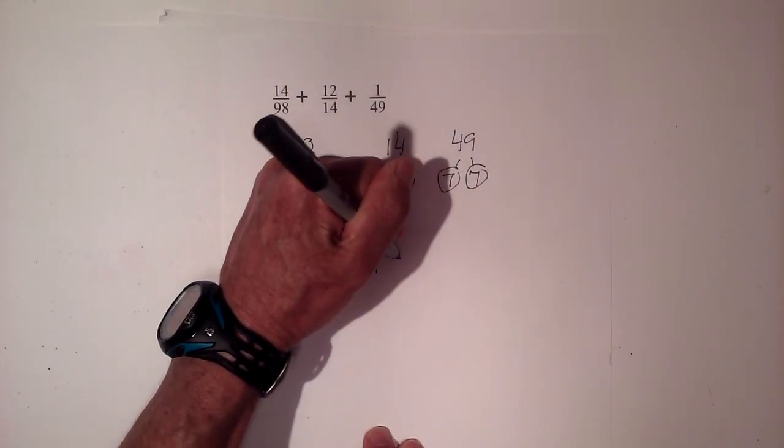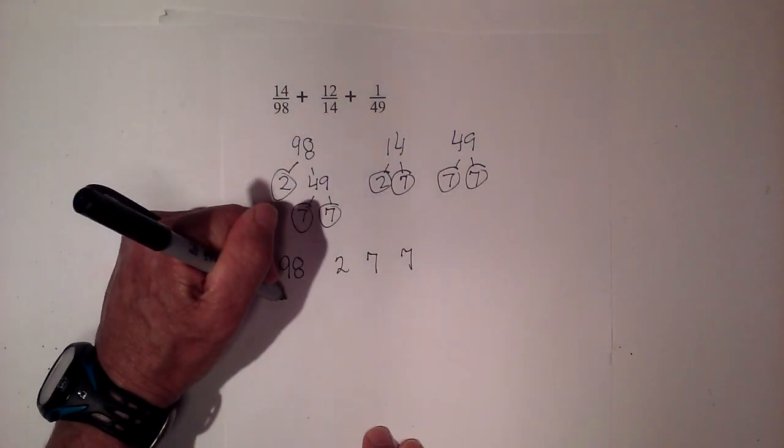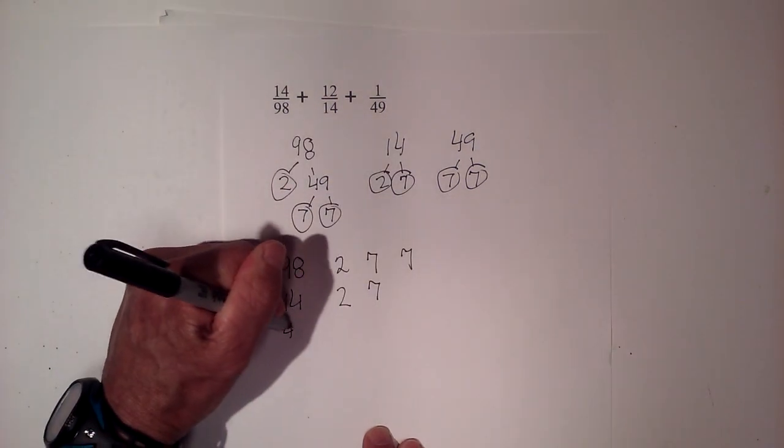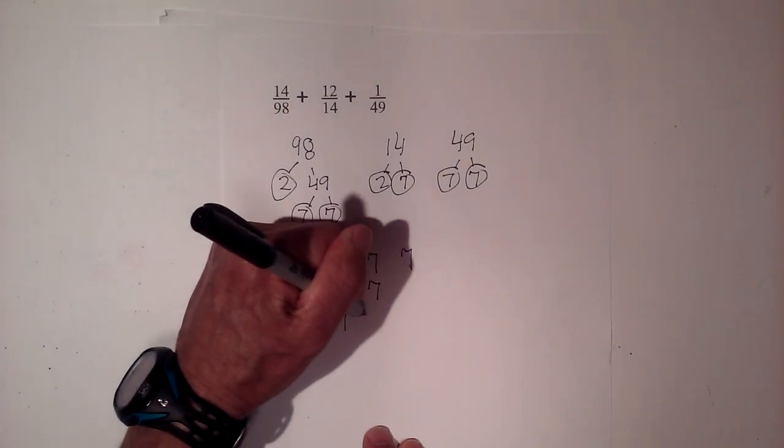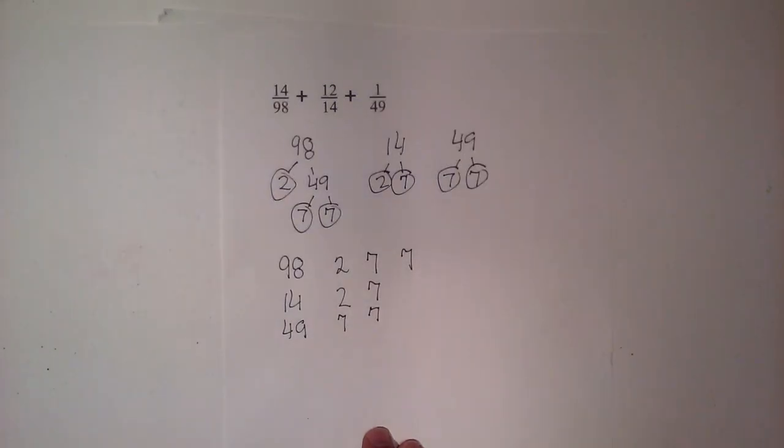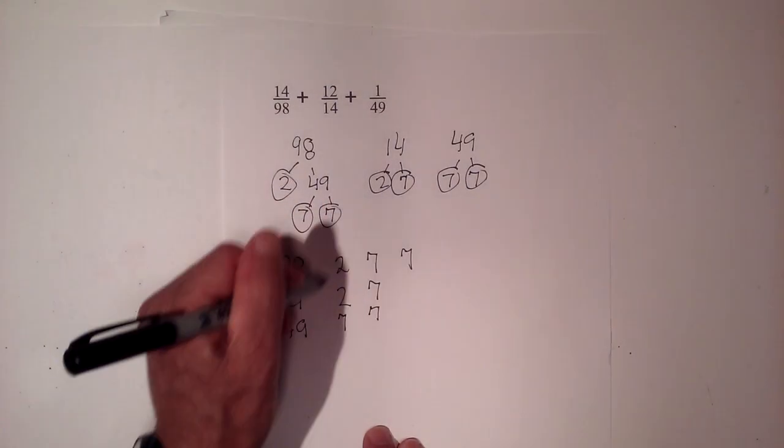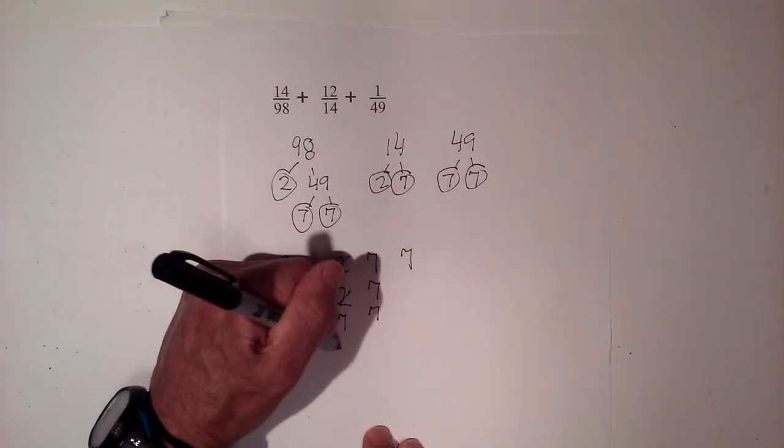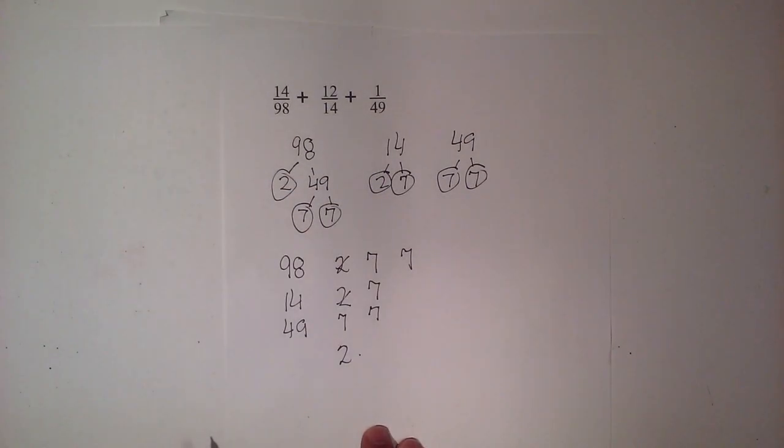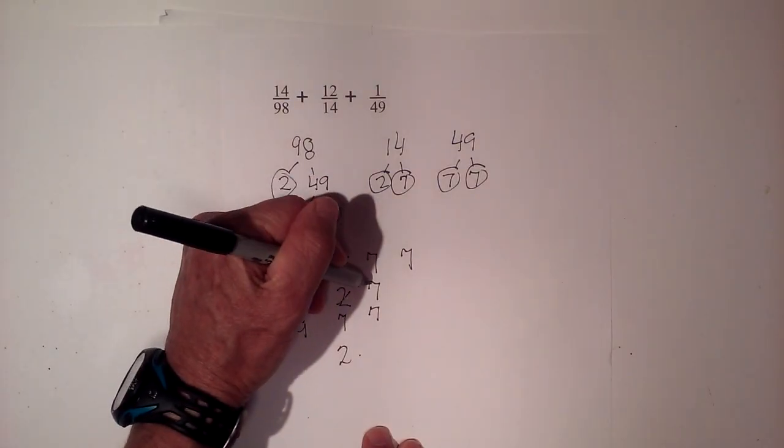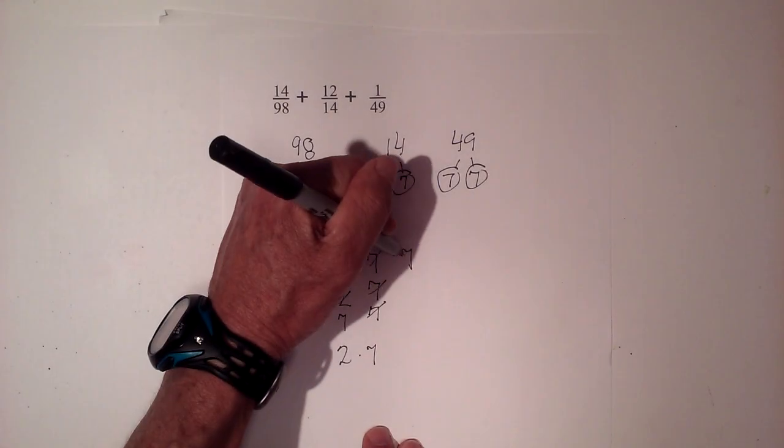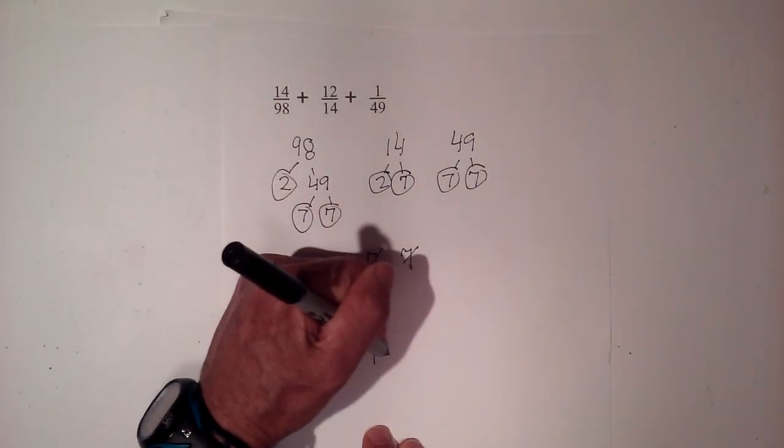We have 2 times 7 and 7. And then with 14, we have 2 and 7. And then with 49, we have 7 and 7. Let's go through and multiply all these together and apply our one rule. 2 is discovered in two of these. So I'm going to write a 2. We have a 7 in these three numbers. And then two remaining 7's.